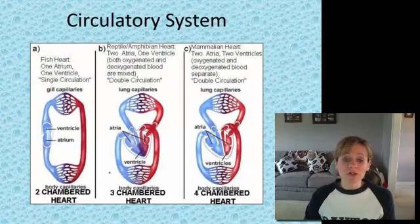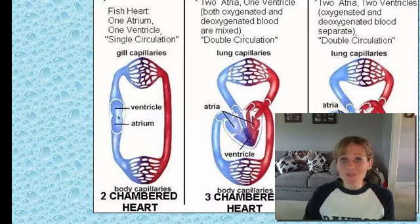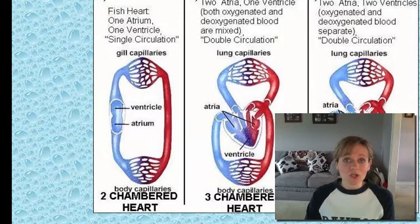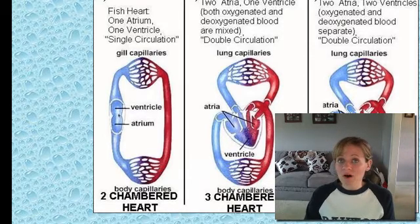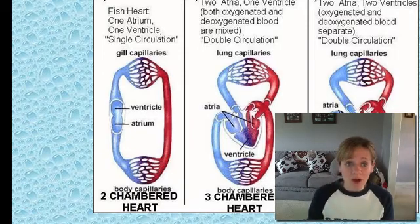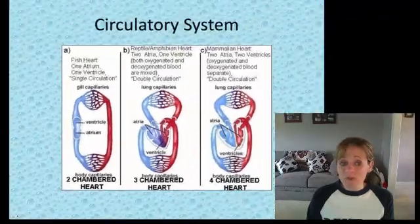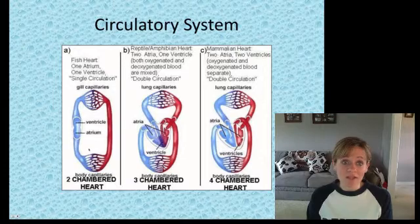Now the circulatory system. This figure shows the evolution of the heart. On the left we have a fish heart — very simple, just two chambers: one ventricle and one atrium. There is no separation, so there is mixing of oxygen-rich and oxygen-poor blood. We also call this single circulation, because the blood does not travel back to the heart between the gills and the body — it just goes heart to body and back. Definitely understand: this is the most simple — only two chambers, mixing of blood, single circulation.